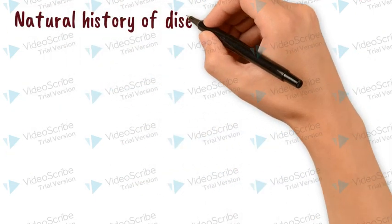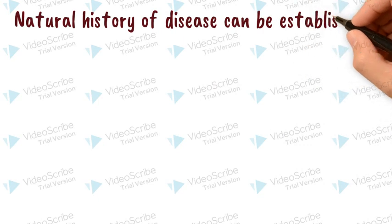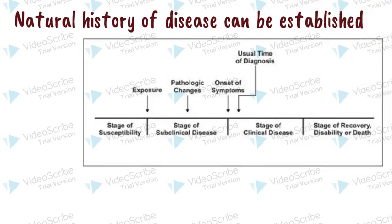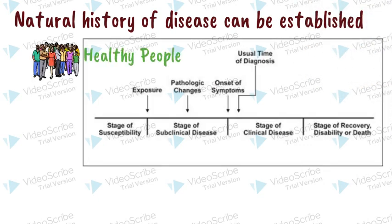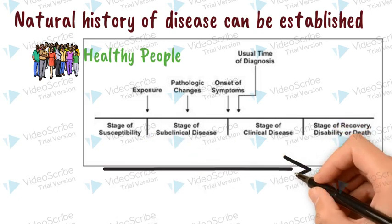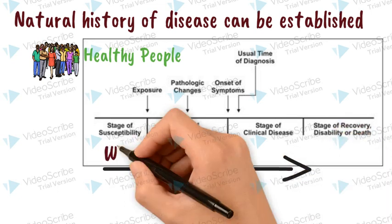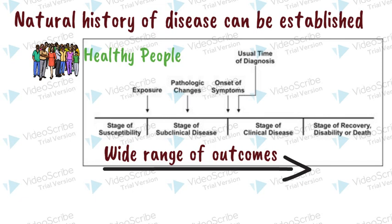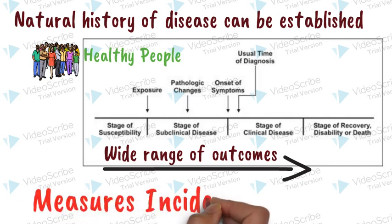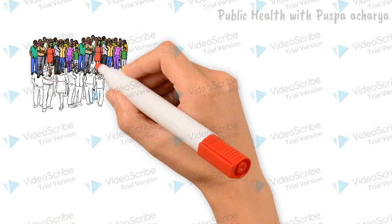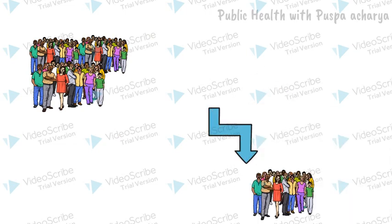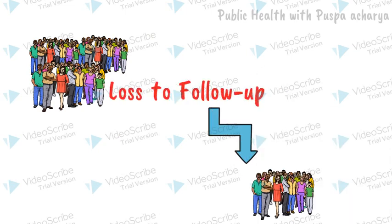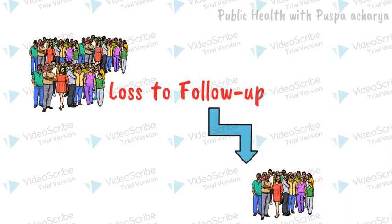In a cohort study, the natural history of a disease can be established, as cohort studies take healthy people as their starting point. It is possible to examine a wide range of outcomes, and it provides direct measurement of disease incidence. However, cohort studies require a long follow-up period, so loss to follow-up is a major disadvantage of cohort study design.